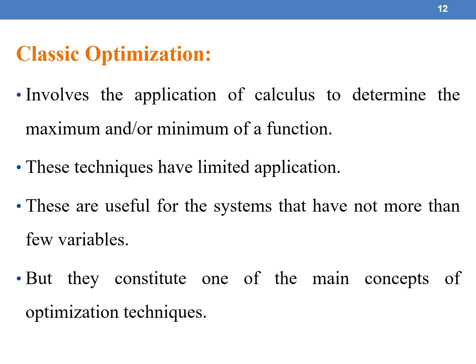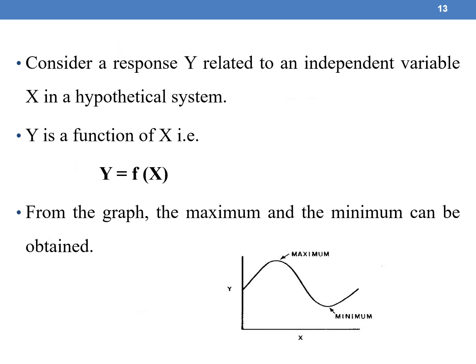Coming to classic optimization. Classic optimization techniques make use of calculus to determine the maximum and minimum of a function. These techniques have limited application and are useful for systems with no more than a few variables, but they constitute one of the main concepts of optimization techniques. Consider a response y related to independent variable x — y is a function of x, y = f(x), and from the graph the maximum and minimum can be obtained.